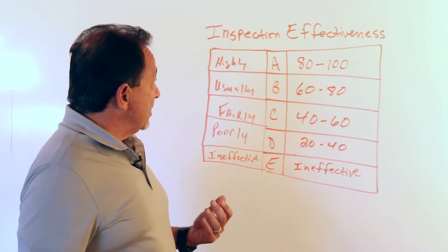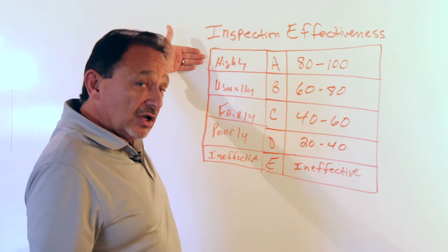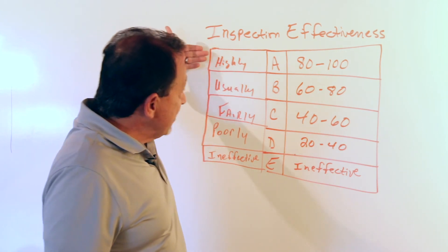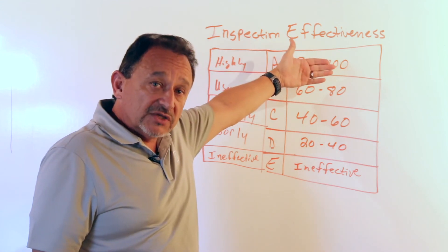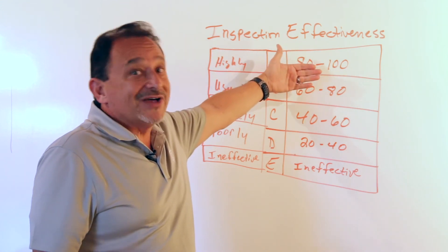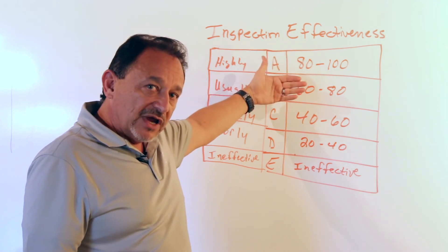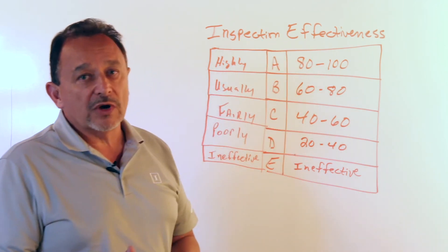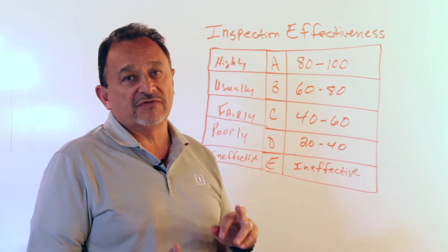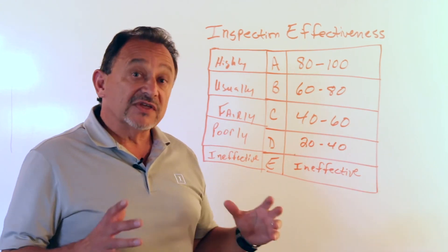Well, an option you could have at that point then is to say, well normally if I had an internally qualified person I would give that an A level inspection grade, but because I didn't, there's some uncertainty there - maybe I want to downgrade that to a B. The important thing is that you're honest with yourself, you're consistent.